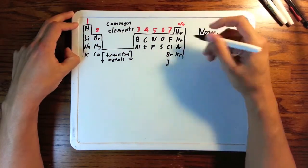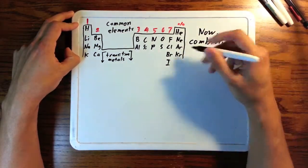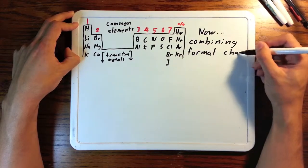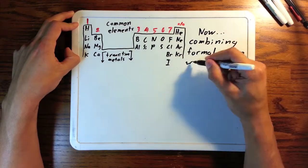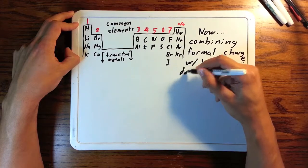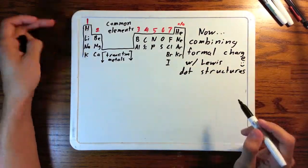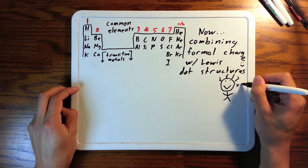Now that you know Lewis dot structures and formal charge, the only thing left to do is to combine them to figure out what the best Lewis dot structure is for a given compound. It's going to be so much fun, you won't even know what to do with yourself. You'll be like this guy. Yay!